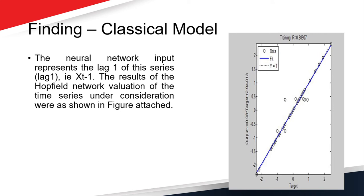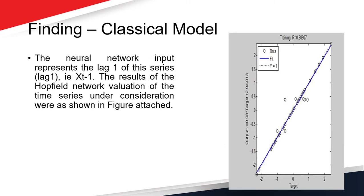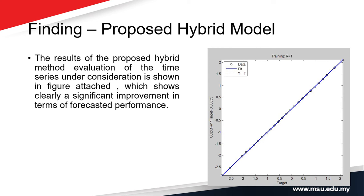The sample was first run on the classical model, where the neural network input represents the lag-1 of the series, which is XT-1. The result of the classical network evaluation is depicted on the right-hand side of the slide. Then the proposed hybrid model was run. The results of the hybrid method show a significant improvement in forecasting performance. In the classical model, values are scattered around the line, whereas in the proposed hybrid model, the output fits closely on the regression line.